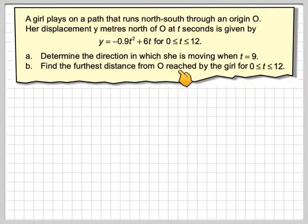Determine the direction she's travelling when t equals 9 and find the furthest distance from O reached by the girl for 0 to 12 seconds.